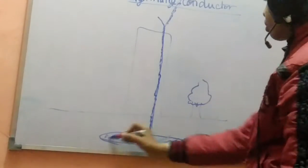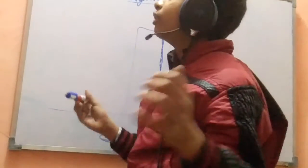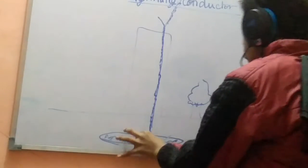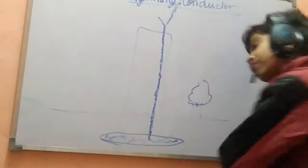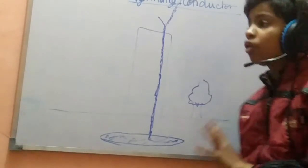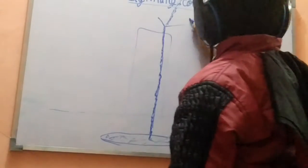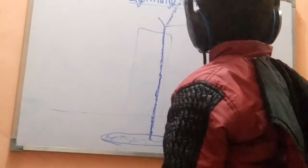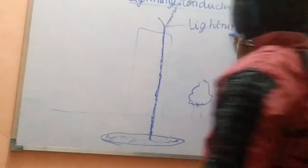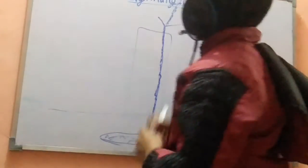The iron rod is a good conductor of electricity. Without a lightning conductor, lightning can damage the building. But with the lightning conductor, when lightning occurs, the Y-shaped iron rod at the top attracts the lightning strike.